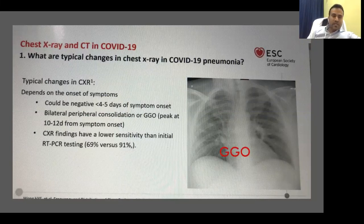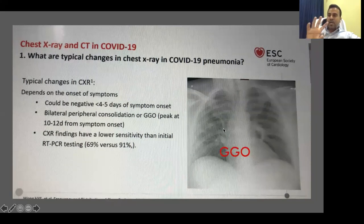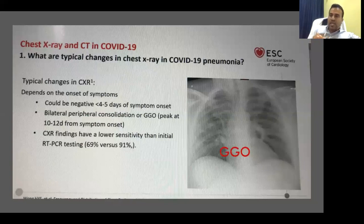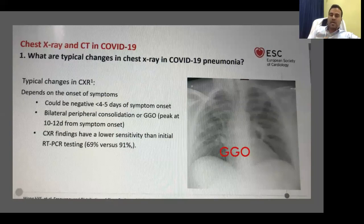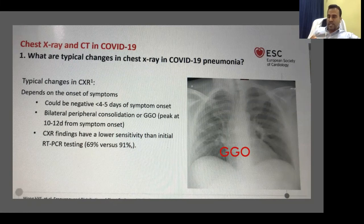The peculiarity of this ground glass appearance is that it is mostly bilateral and peripheral — not near the center of the lung or towards the heart, but to the outer side of the lung only. The most important finding is either GGO (ground glass opacity) or consolidation. Both will appear peripherally and mostly bilaterally. Majority of the time, both lower lobes will be affected.